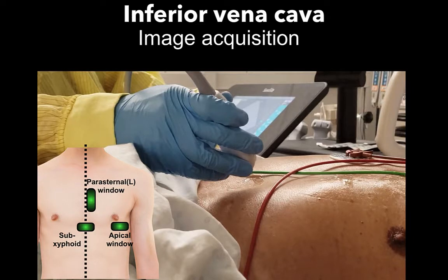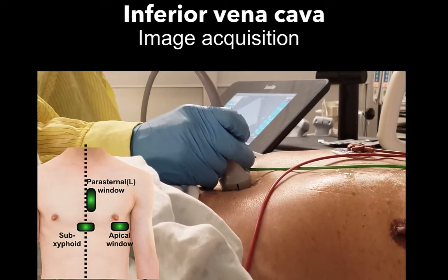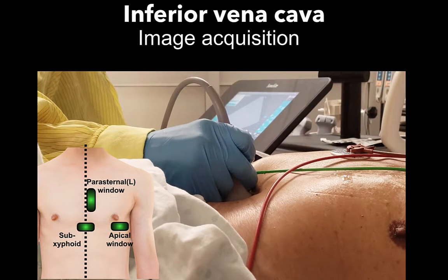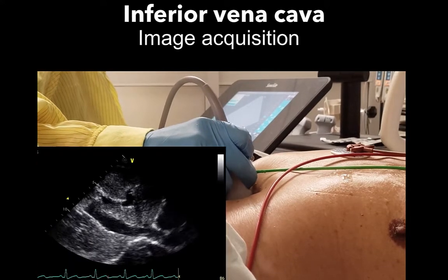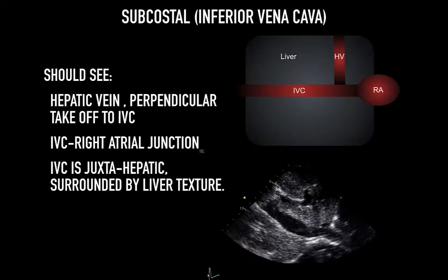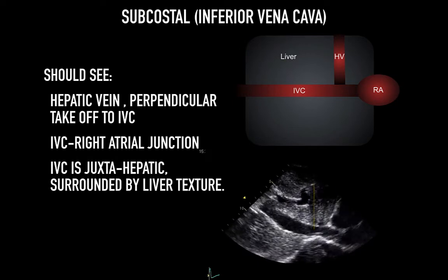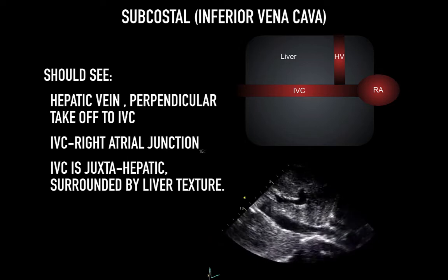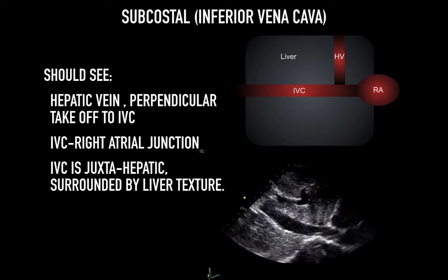Moving on to the inferior vena cava view, obtained just below the xiphisternum to the right of midline. The probe should be pointed towards the head, or cephalad, with the planar cut following the parasagittal or sagittal plane. Start gently, as it often doesn't require a lot of pressure — just some finessing. With some gentle rocking, looking upwards with the tail falling downwards, you will easily see the entrance of the IVC into the right atrium. You can see the IVC coursing beside the liver into the right atrium. To properly identify the IVC, you should see the hepatic vein, which is perpendicular to the IVC. You should also see the IVC right atrial junction and recognize that the IVC is juxtahepatic, surrounded by liver texture. The aorta does not connect to the right atrium and is often surrounded by hyperechoic mixed-density fat.